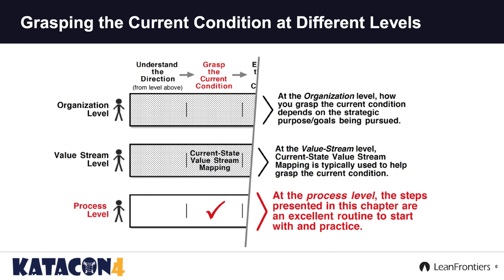At the organizational level, grasping the current condition could look like understanding the market dynamics, understanding our competitors, understanding different elements of the current condition of our business, what's our current outcomes. At the value stream level, we have a great kata - the current state value stream mapping, which Mike and John Shook provided direction for with Learning to See. That is a kata at the value stream level for understanding the current condition. But what about at the process level - more detail than just standing in the circle?